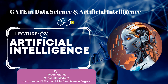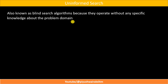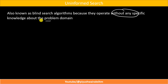Let us revise what we discussed in the last lecture about uninformed search. Uninformed search is basically a search algorithm which operates without any specific knowledge about a particular problem. We do not have any other information — I only know this is my initial state and this is my final state. I do not know how to reach that state or how far it is from any intermediate state. That is why it is also called a blind search algorithm.